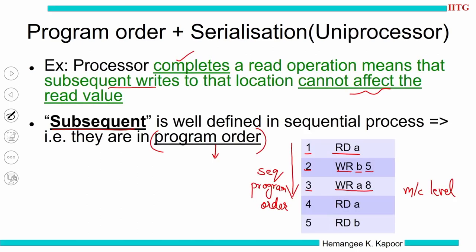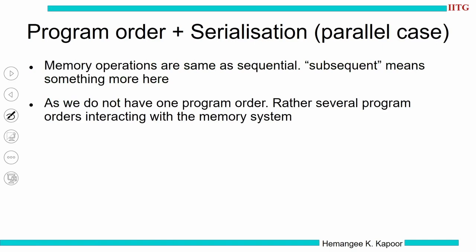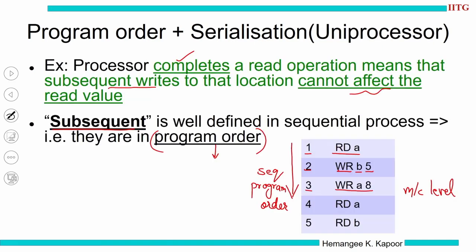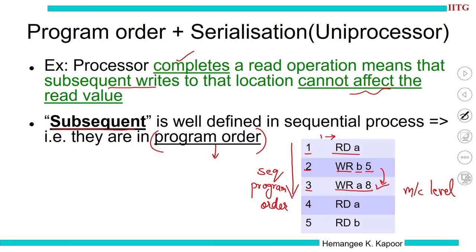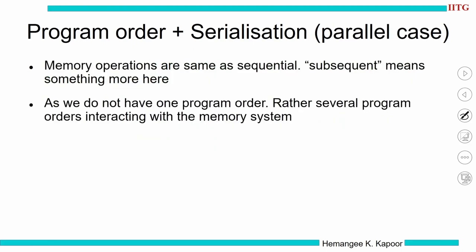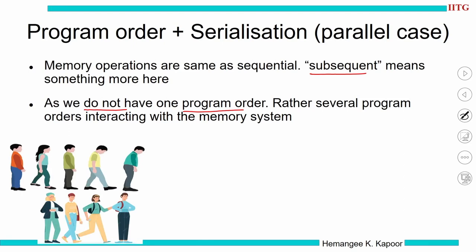In a uniprocessor with a single process, we have a sequence of instructions. But what happens in a parallel processor — what does 'subsequent' mean? In the sequential case we can say one instruction comes after another because there is a single thread. But in a parallel case, how can we define 'subsequent'? We have multiple program orders and we do not know the final program order, so let us see an analogy to understand this concept.